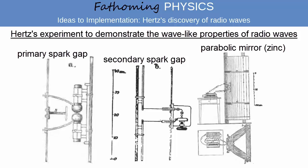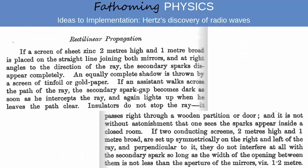Hertz established that the beam of radio waves he produced with his mirror travelled in straight lines, and could be blocked by conductors such as metal sheets, but not by insulators such as wooden doors.